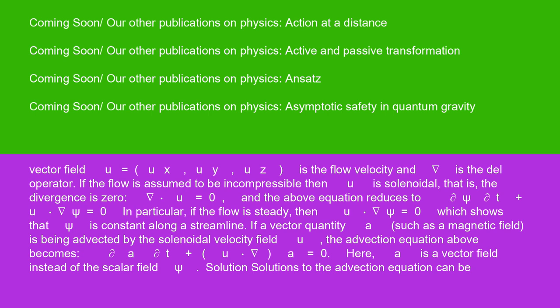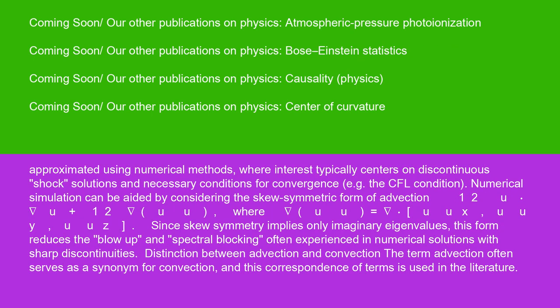Solutions to the advection equation can be approximated using numerical methods, where interest typically centers on discontinuous shock solutions and necessary conditions for convergence, e.g., the CFL condition. Numerical simulation can be aided by considering the skew symmetric form of advection: ½u·∇u + ½∇(u·u).